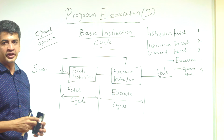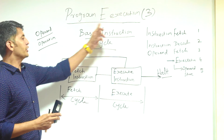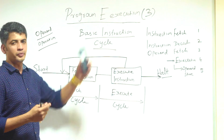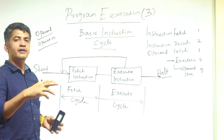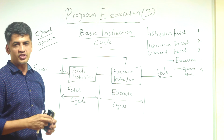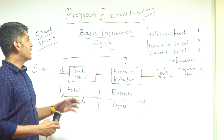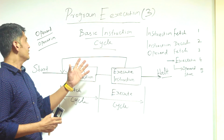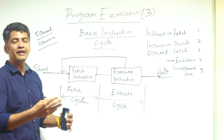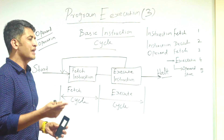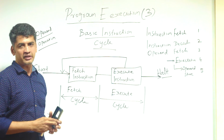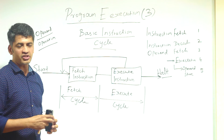This is the third video in the series. In the first video, we started with how a program will be executed, and in the second video we discussed how instructions are executed by the CPU. In this video, we'll discuss the stages of instruction execution. From the previous video, there is a basic instruction cycle.